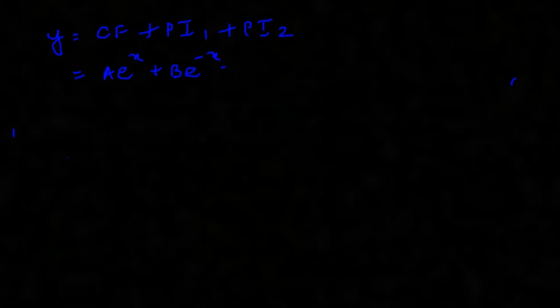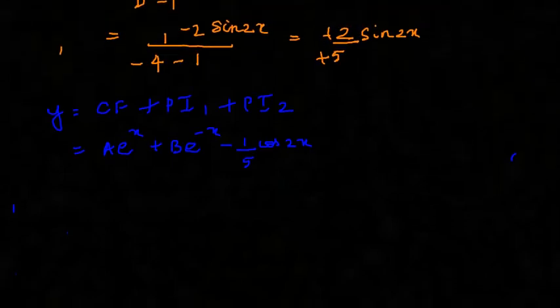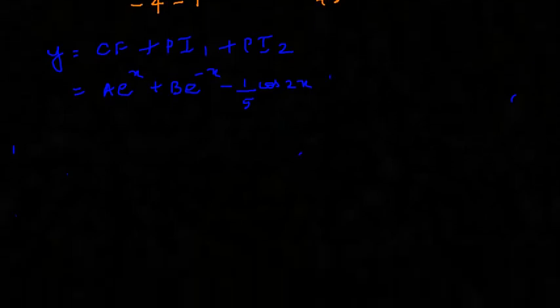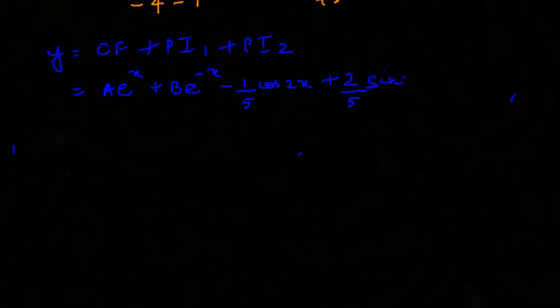Minus 1/5, right. Let me change the sign here. Minus 1/5 cos 2x. And PI₂ was just plain 2/5 sin 2x. So that is the final solution.